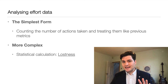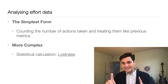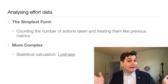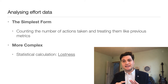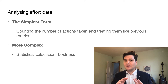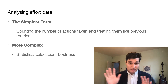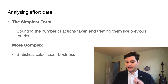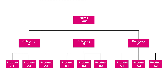Counting actions is the simplest form, but there's a better way called lostness. This part does take a small bit of maths, but the maths is incredibly simple — if you can use Excel, you can nail this. Here we have a website and this is its structure: we've got a homepage, from the homepage you get to category pages, and from category pages you get to product pages. A simple shopping website — obviously more complex in reality, but we'll use nine product pages for now.